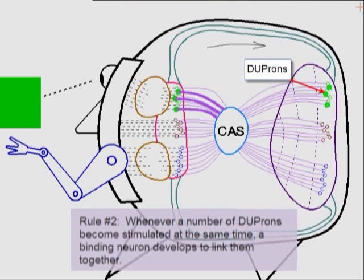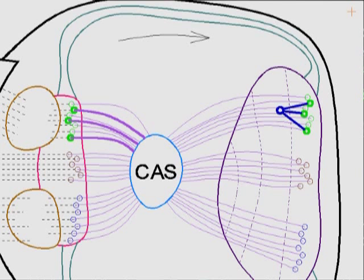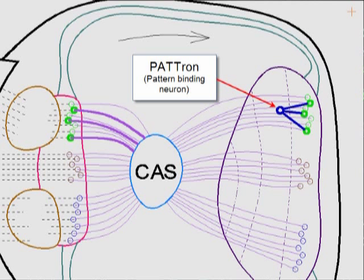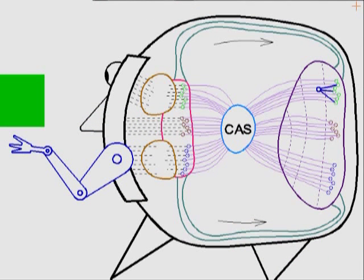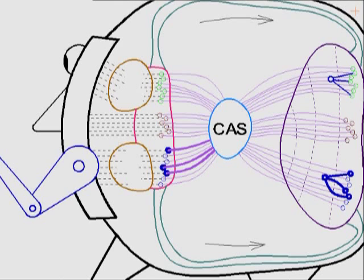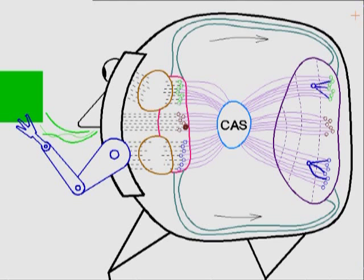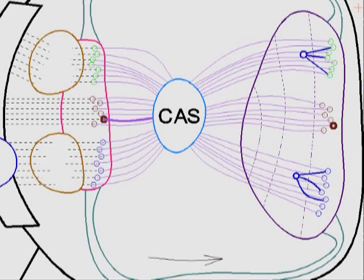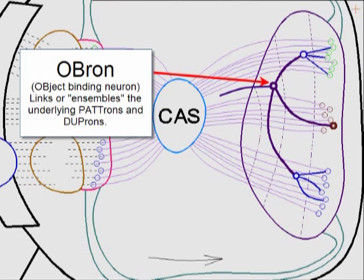The second rule is that whenever a number of duprons become stimulated at the same time, a type of binding neuron develops to link them together. Because it's linking visual or tactile patterns, I like to call these pattern neurons or patrons. In this case, we'll assume that these three duprons correspond to the visual information of the green tile. Similarly, as we consciously engage this green tile object, we're also going to experience tactile sensations from our hands, which will result in the growth of another patron. We'll also assume it has some associated odor. After the entire object has been experienced, another upper-level patron — or obron, for object neuron — develops and binds or ensembles the underlying patrons and duprons. Not only does the obron ensemble all of the co-occurring duprons and patrons, but it also forms a link with the central activating system. The same is true for patrons. This is basically how memories are created.